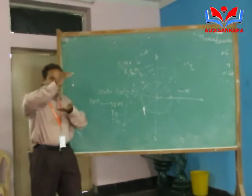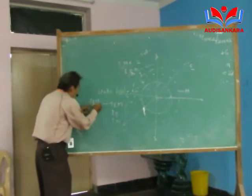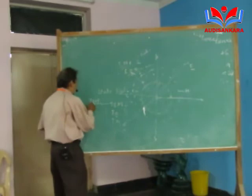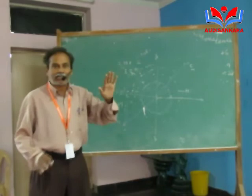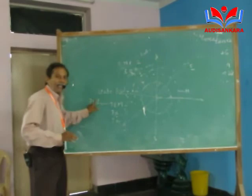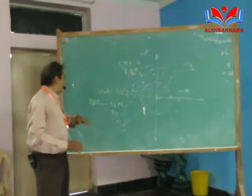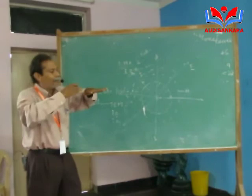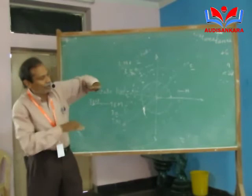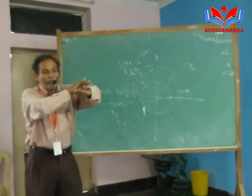In the propagating direction, no electric or magnetic fields are available. The electric and magnetic fields are transverse to the propagating direction. Let us assume this is the propagating direction — the electric field and the magnetic field are oriented like this. So in the propagating direction there is no component. That is called TEM.